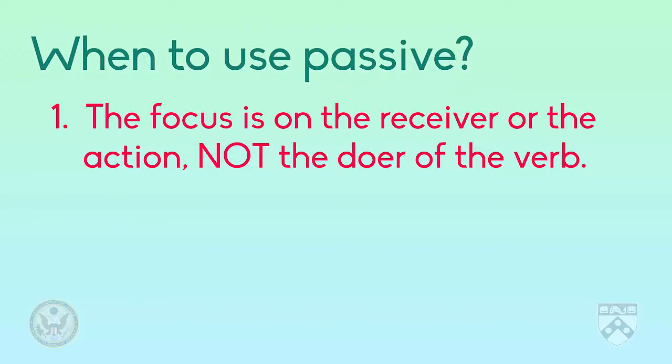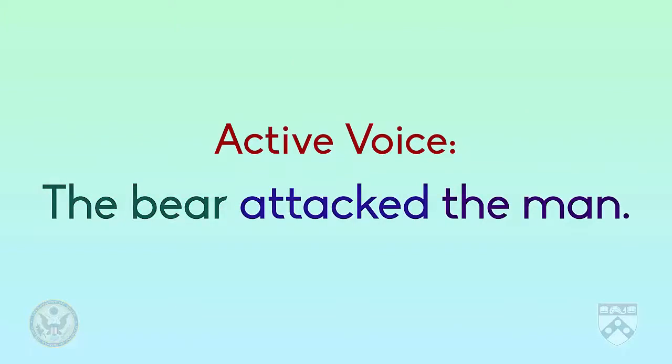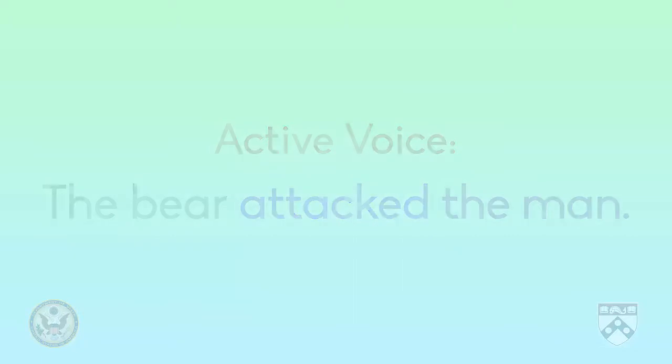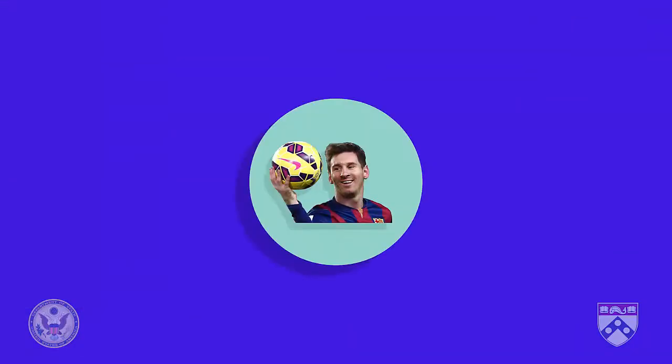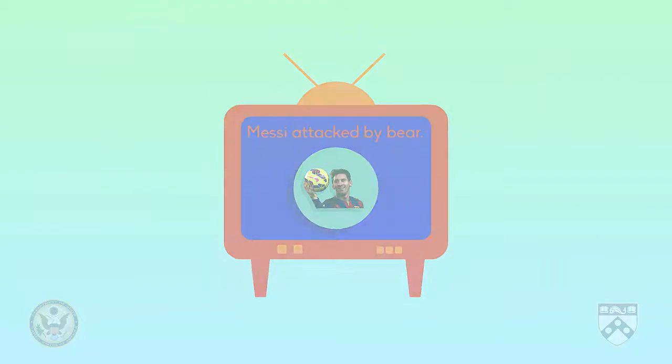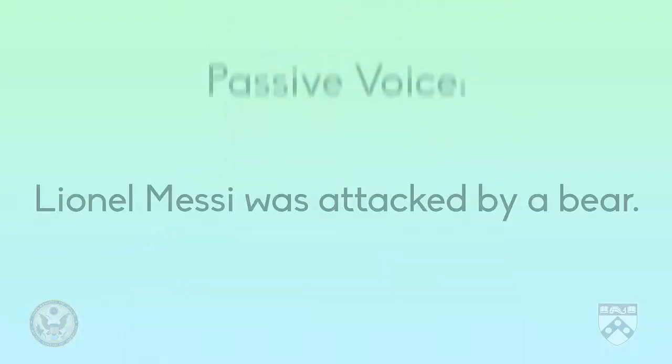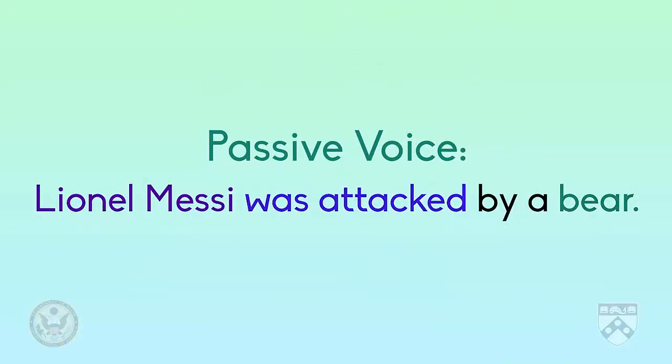Let's think back to our example from the last video: The bear attacked the man. Let's pretend that the man is very famous, like soccer superstar Lionel Messi. If he were attacked by the bear, this would surely be in the news. In this case, since the receiver of the verb is very famous, we would want to put this information first and therefore use the passive voice: Lionel Messi was attacked by a bear.